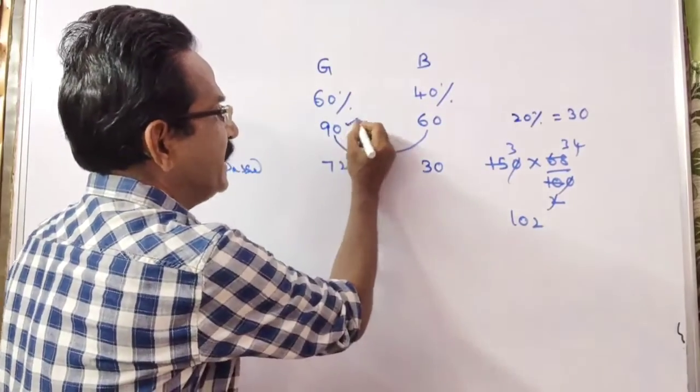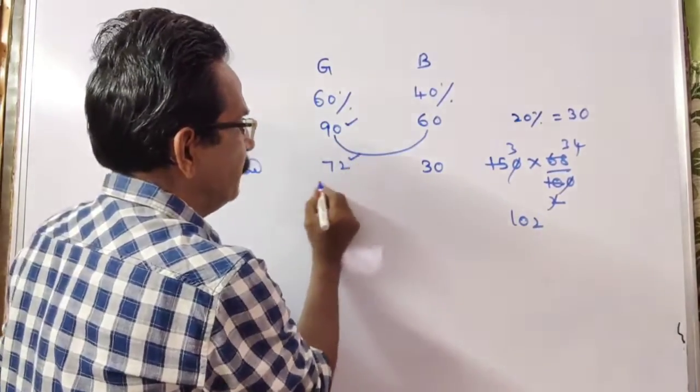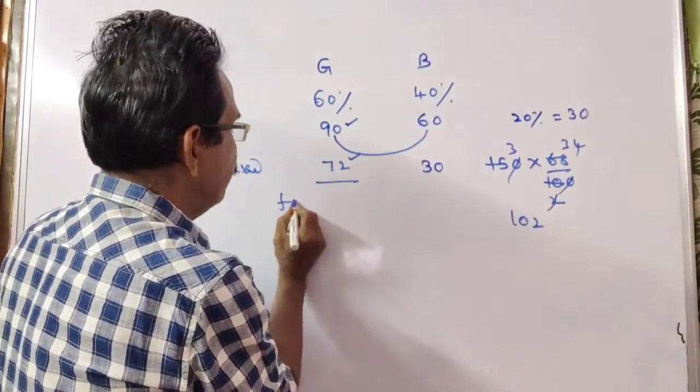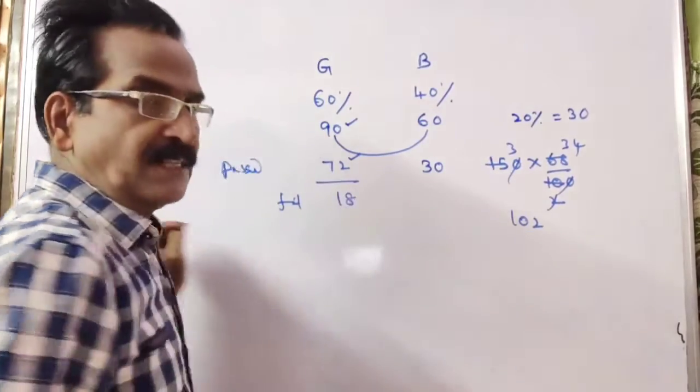So, out of 90 girls, 72 girls passed. So, girls failed 18.